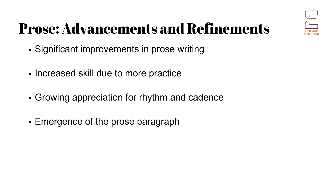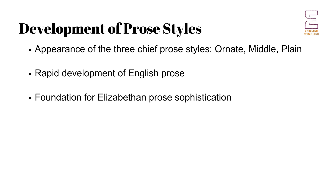Prose Advancements and Refinements. In contrast to the decadence in poetry, the development of prose during this period was marked by a series of small but significant improvements, leading to substantial progress. Unlike poetry, prose did not suffer from retrogression. Increased practice led to a noticeable increase in skill among prose writers, accompanied by a growing appreciation for the beauties of rhythm and cadence. One of the most notable advancements was the emergence of the prose paragraph. Moreover, the period saw the faint but perceptible appearance of the three chief prose styles — the ornate, the middle, and the plain — laying the foundation for the sophisticated prose that would characterize the Elizabethan era and beyond.